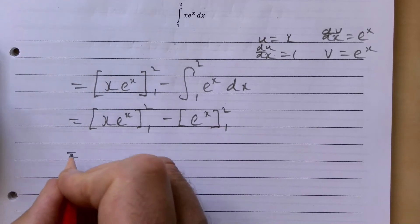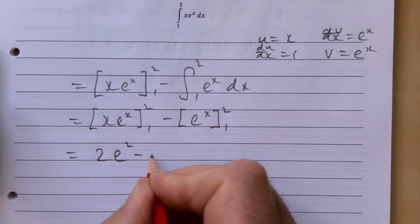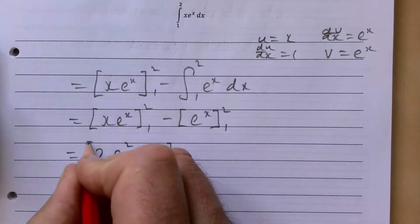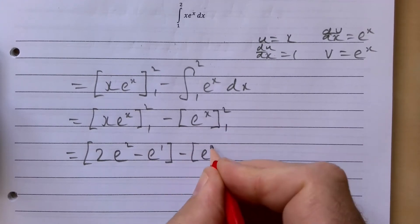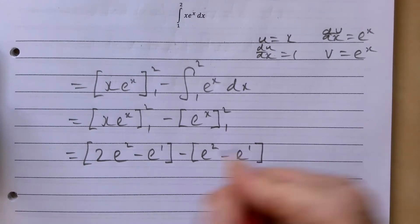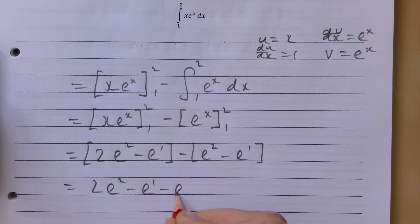So subbing in, we are going to get 2 e to the 2 take away e to the 1 for this bit here, minus e to the 2 take away e to the 1 take away e to the 2 plus e to the 1.